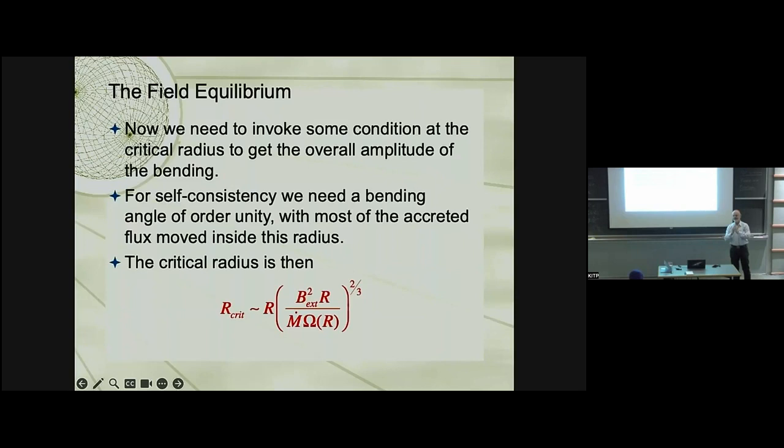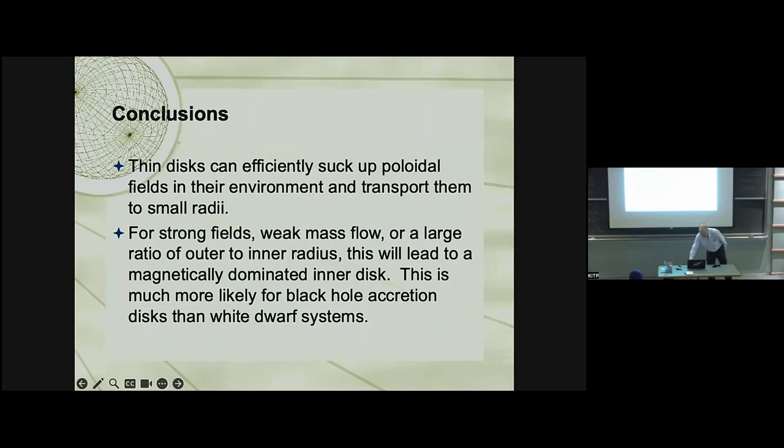So if it's a black hole, the inner edge is a few times the Schwarzschild radius of the black hole. If it's a white dwarf, it's the radius of the white dwarf plus a little bit. And what you find from that is that white dwarfs shouldn't run jets. Just because the radius of the white dwarf is typically too big. And in fact they don't. So there's that. And black holes typically should.